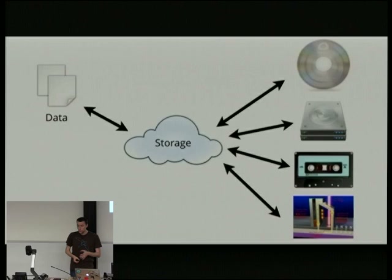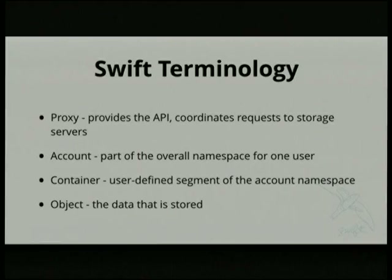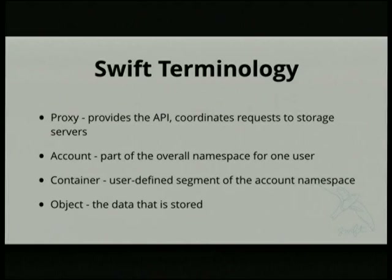There are a few key things to know about Swift. The first is the proxy. The proxy inside Swift does a few things: primarily it implements most of the Swift API, and secondarily it coordinates communication with all of the backend storage nodes. Because the proxy knows information about the cluster, your clients can directly talk to the Swift cluster without having to implement extra libraries or have stateful knowledge of the current state of the cluster.